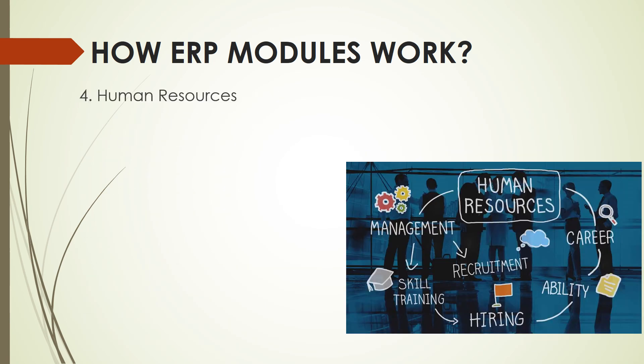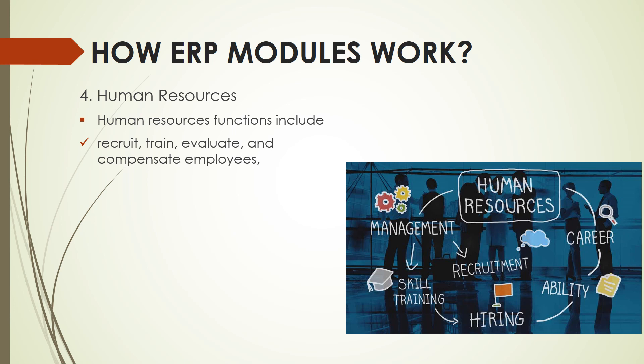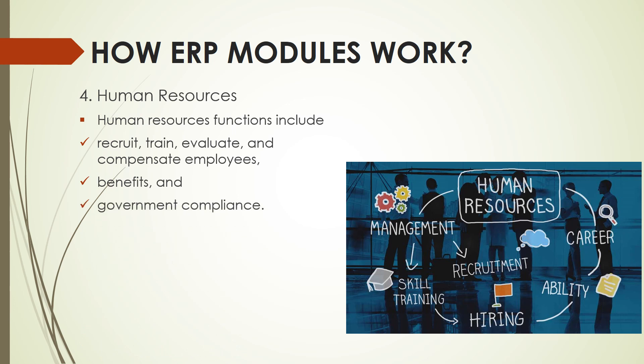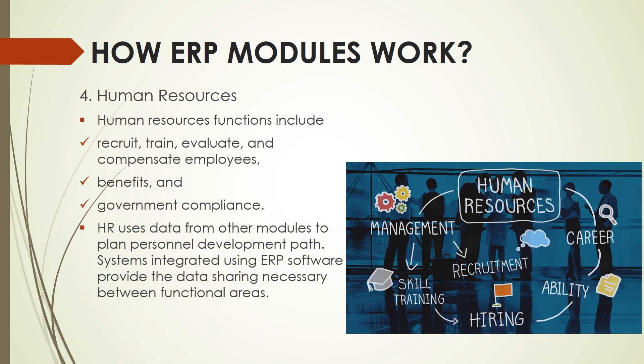When we speak of the human resources module, here are the available functions included: recruit, train, evaluate, and compensate employees, benefits, and government compliance. HR uses data from other modules to plan personnel development plan or PATH. Systems integrated using ERP software provide the data sharing necessary between functional areas.